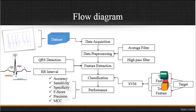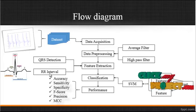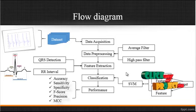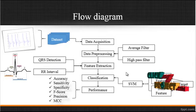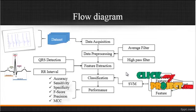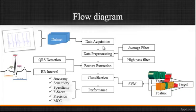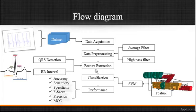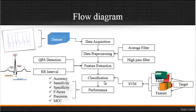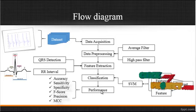Now we are going to discuss the flow diagram for the process. This is the overall flow structure, which consists of five major steps: first, data acquisition; second, data pre-processing; third, feature extraction; fourth, classification; and finally, performance estimation.